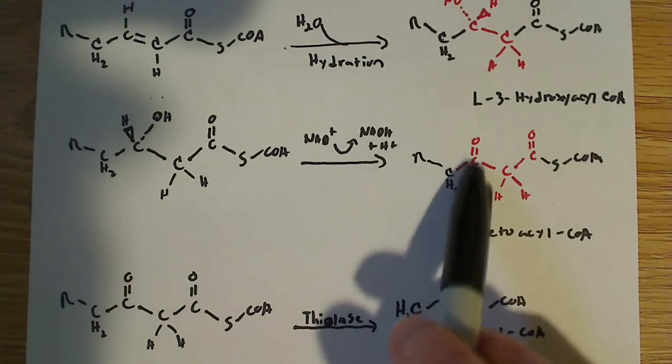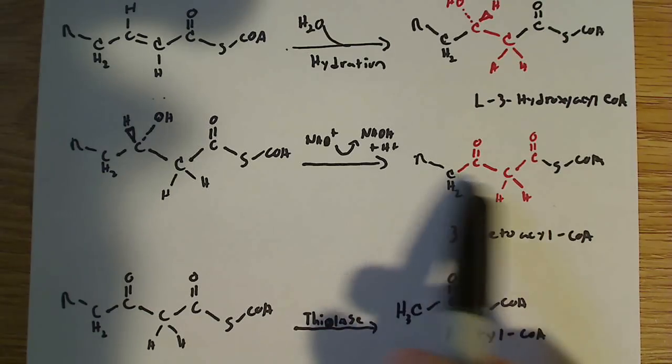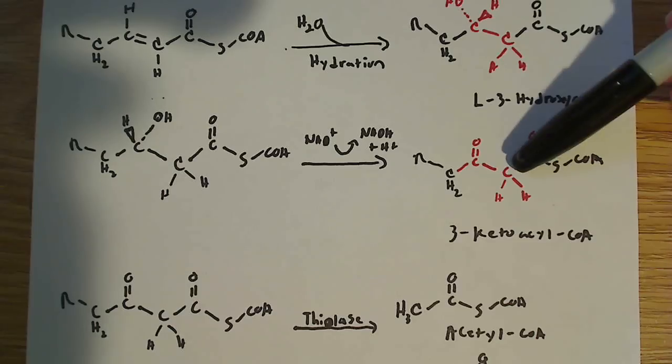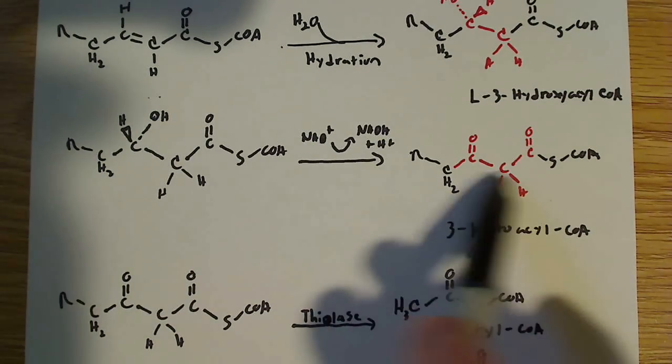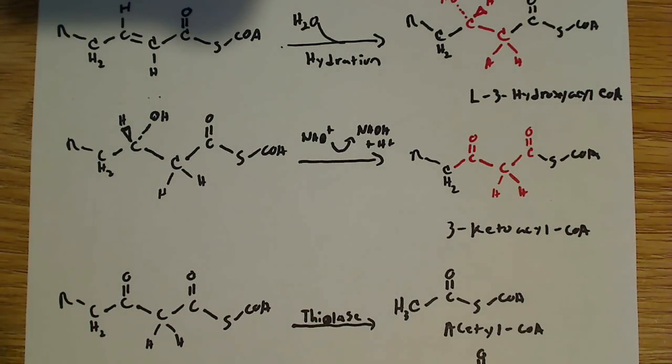This is a ketone group. So now we form a ketone group on this third carbon here. So between carbons 2 and 3, again, is where all the action's going on, and we form this 3-ketoacyl-CoA.